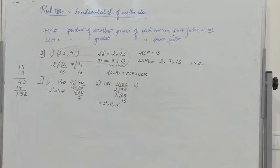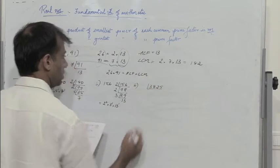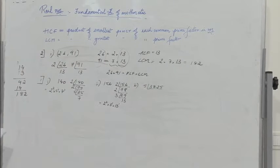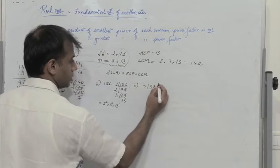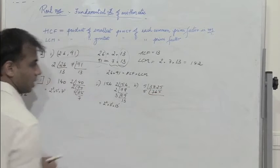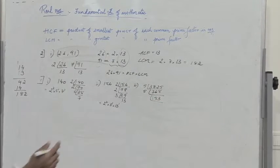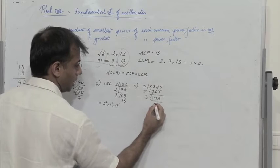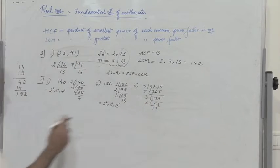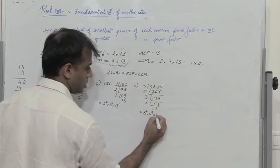The third problem: 3825. Since it ends in 25, I know it's divisible by 5. Dividing by 5 gives 765, by 5 again gives 153, by 3 gives 51, by 3 gives 17. These are all prime numbers. So 3825 = 3² × 5² × 17¹.